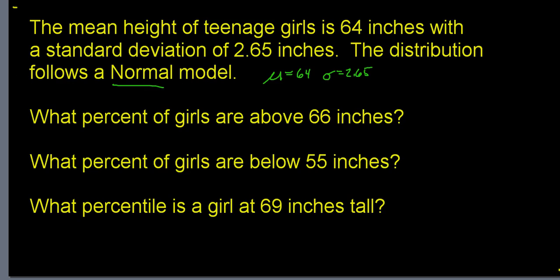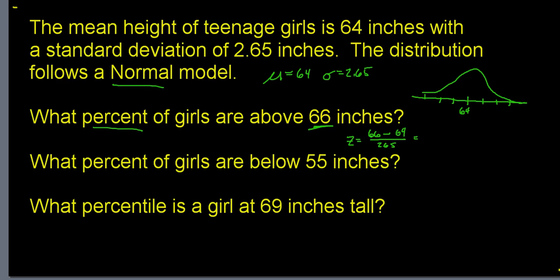What percent of girls are above 66 inches tall? On the normal model, 64 is right in the middle. I can't answer until I find where 66 falls, so I need the Z-score: 66 minus 64 divided by 2.65 equals 0.755. That means a girl who is 66 inches tall falls about 0.75 standard deviations above the mean — not even a full standard deviation above.